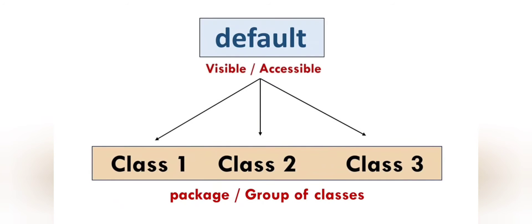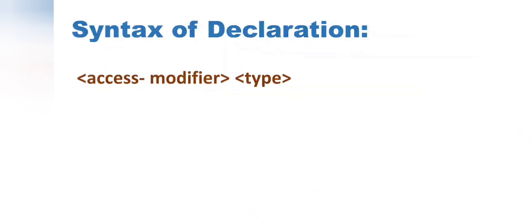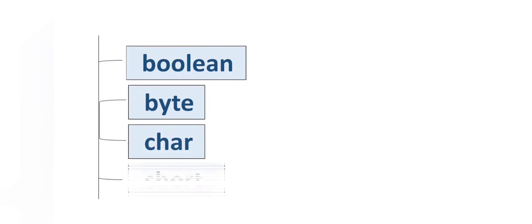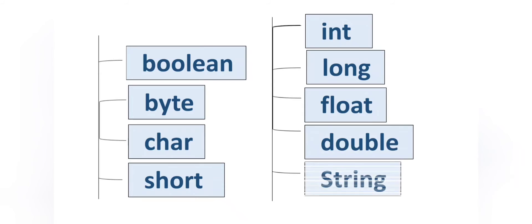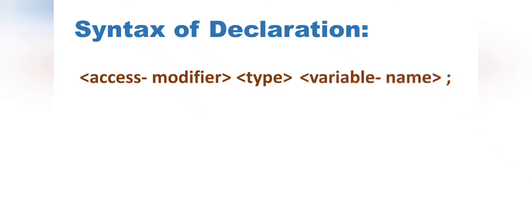If we declare a variable as private, it is accessible only within the same class. If declared as protected, it is accessible within the same package — a package being a group of classes. If we don't declare any access modifier, it is considered default, and the variable is accessible within the same package. Then we write the data type, such as boolean, byte, char, short, int, long, float, double, or String, followed by the variable name and a semicolon at the end of the statement.